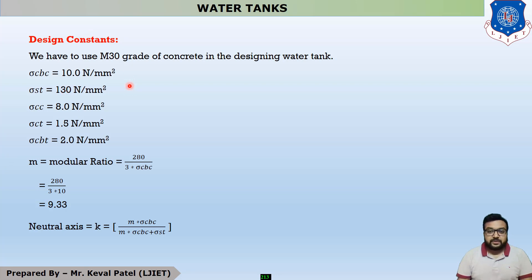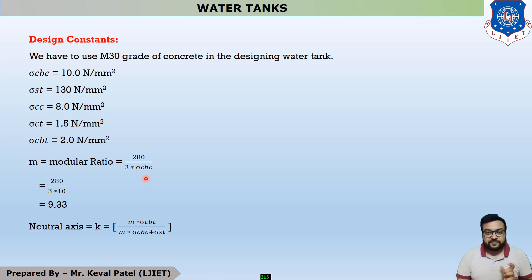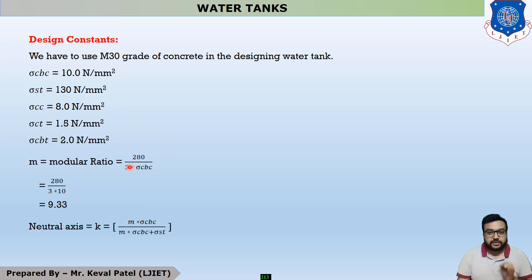The permissible stress is given in IS 3370 Part 2, 2009. Whenever we have to design any water tank, we assume the concrete grade as M30. For M30 grade of concrete, the value of sigma CBC — which is the permissible stress in concrete due to bending in compression — is 10 Newton per mm square. Putting this value into the equation, we get the modular ratio as 9.33.